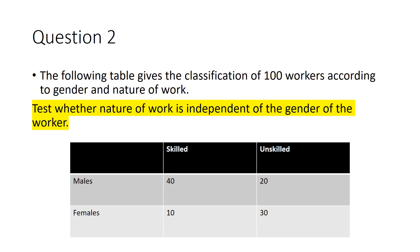This is my hypothesis. You can see males and females — this is the gender-wise breakdown. Those who are skilled: 40 males and 10 females; those who are unskilled: 20 males and 30 females. The total would be 40 plus 10, that is 50, and 20 plus 30, that is also 50. So total data is 100 workers.